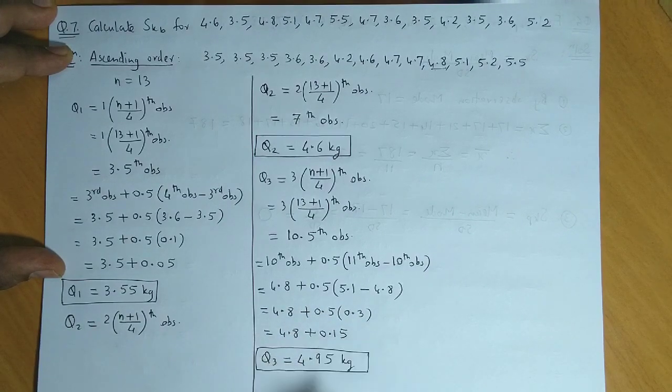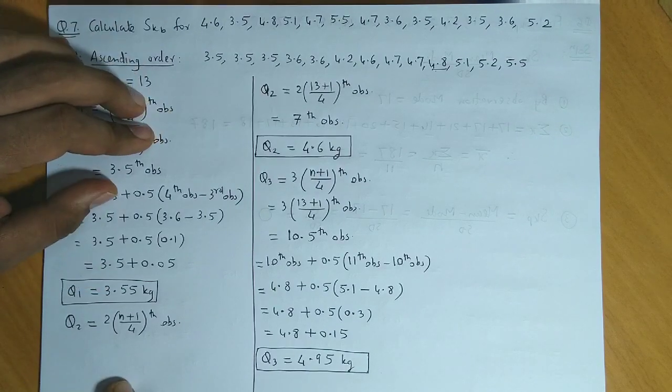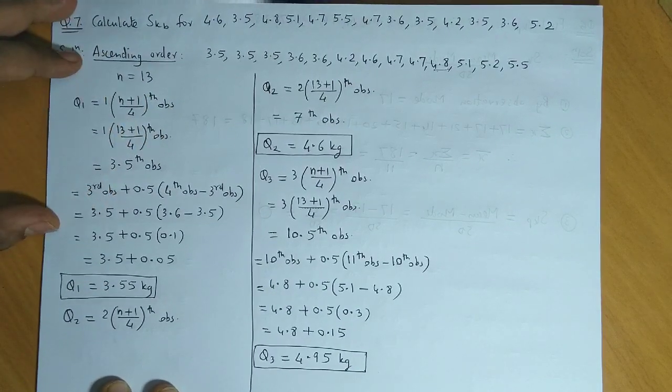So we have obtained all the 3 quartiles Q1, Q2 and Q3. Now we can find SKB.